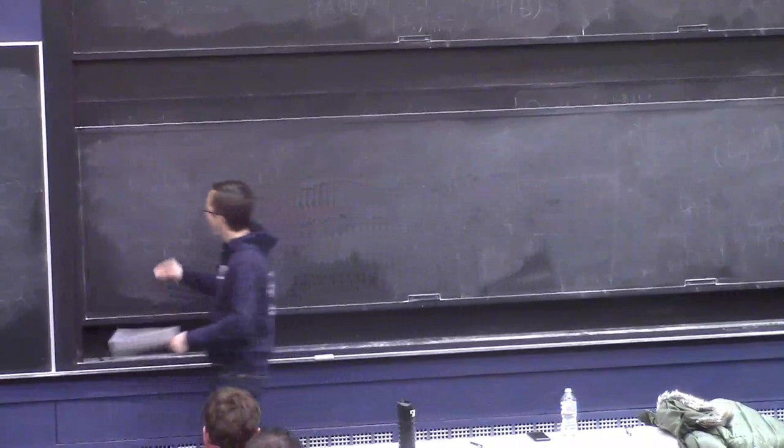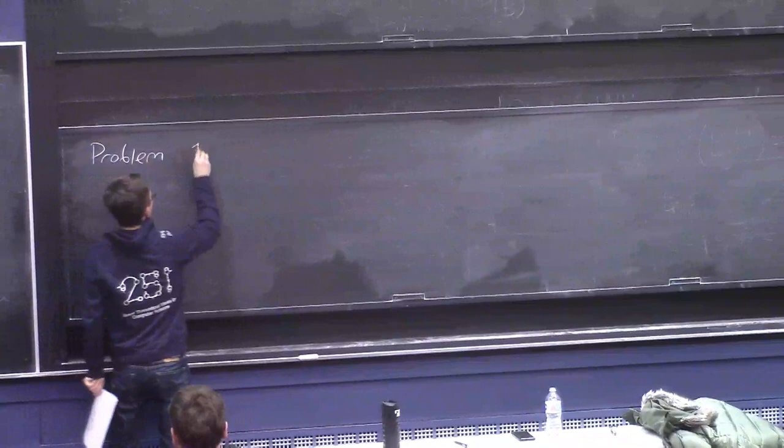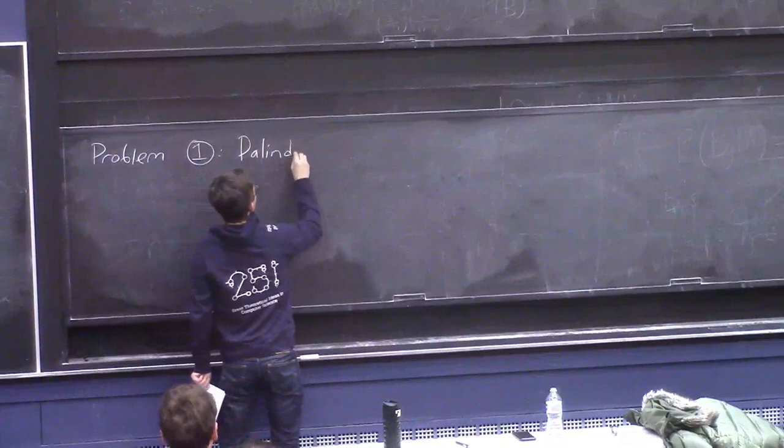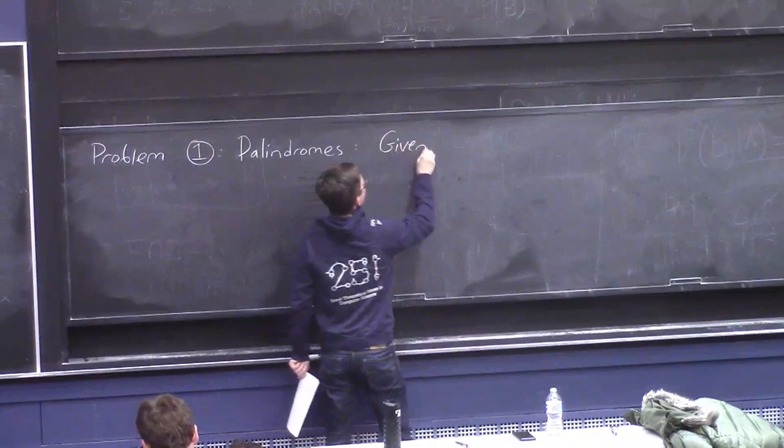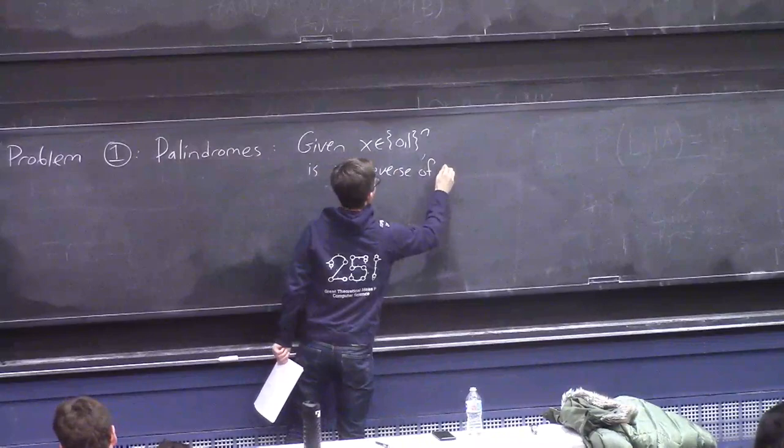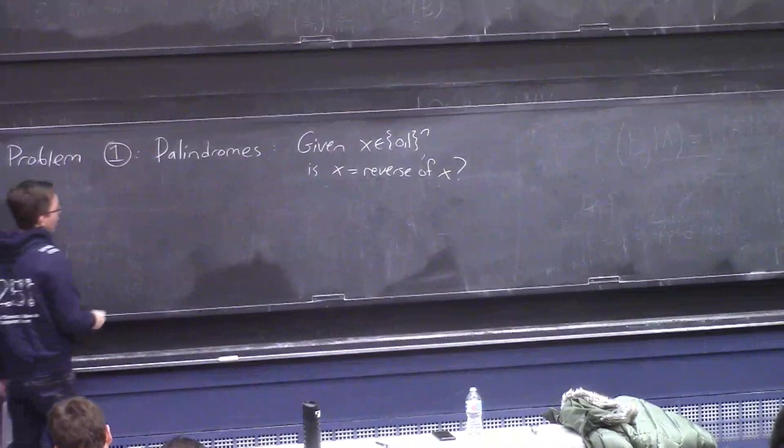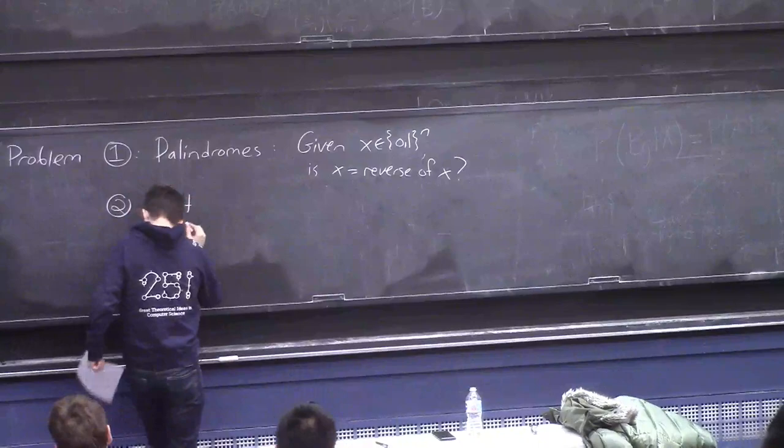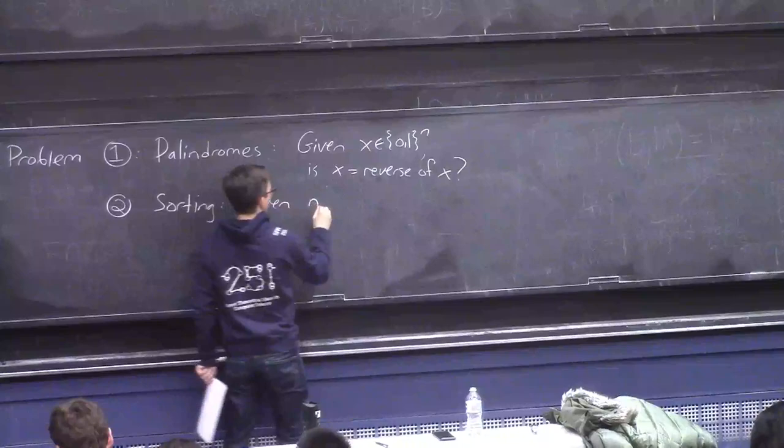So let me state two very basic algorithms problems. Here's problem one, palindromes. You're given a string, you want to know if it's the same in reverse. So this is given x of length n, is x equal to the reverse of x. That's a pretty simple algorithmic problem. And here's another one that you learn about in your cradle, sorting. The task is given n integers, sort them.